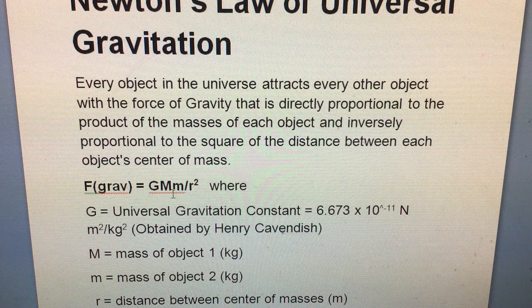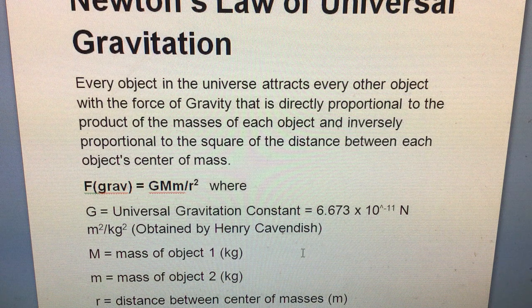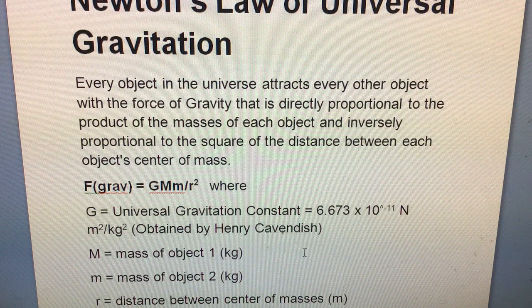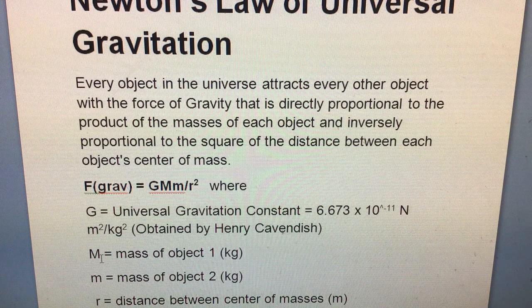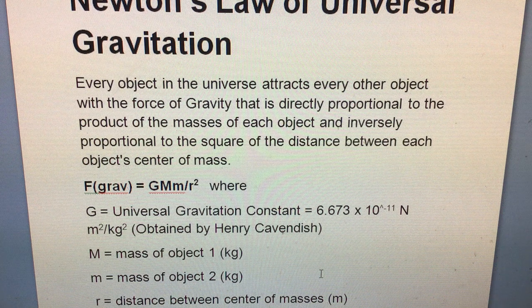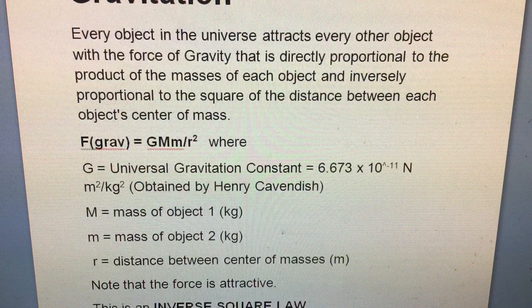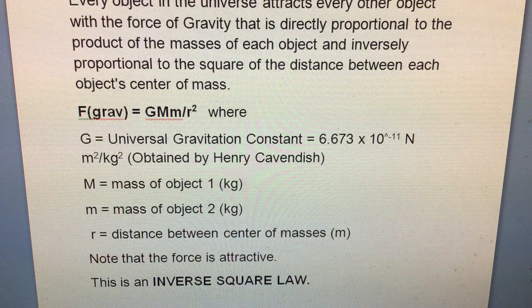Big M is the mass of one object, normally the larger one we use, and little m is the mass of the smaller object. So when we do it for this example, I'll use big M for the planet and little m for the satellite. R is the distance between the center of masses for each, and note that the force is attractive.